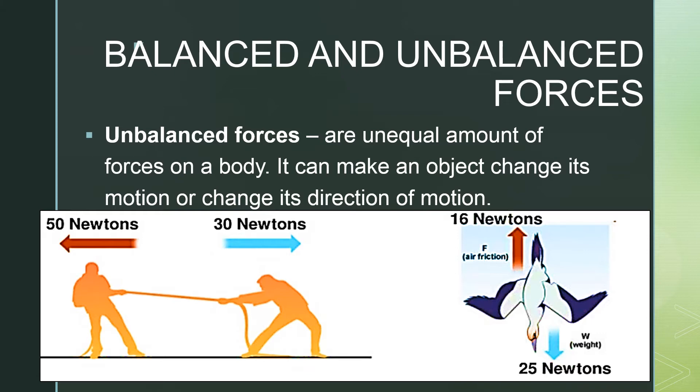For example, in a tug of war, if one group exerts more effort or more force on the rope, then that group will be able to pull towards it the other group. For birds that are diving, the air resistance is lesser